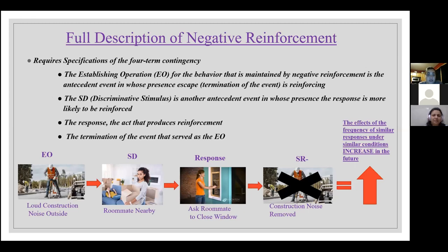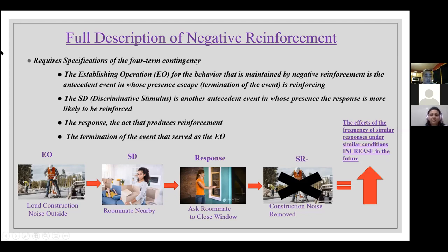Our full description of negative reinforcement consists of four components. The first is the establishing operation — the antecedent event in whose presence escape is reinforcing, so the termination of that event. Then we have our SD, another antecedent event in whose presence the response is more likely to be reinforced. Then we have our response, the act that produces reinforcement. And last, the termination of the event that served as the EO. For example, the establishing operation is loud construction noise outside; the SD is a roommate nearby; the response is asking the roommate to close the window; and then the construction noise is removed, increasing similar responses in the future.